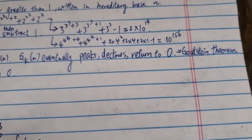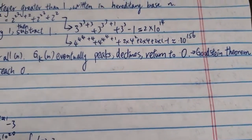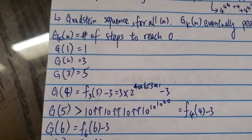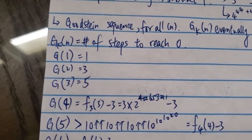But eventually, after a very, very, very, very, very long time, it would peak, decline, and slowly get back to zero. And the Goodstein sequence is how many steps it requires to reach zero.